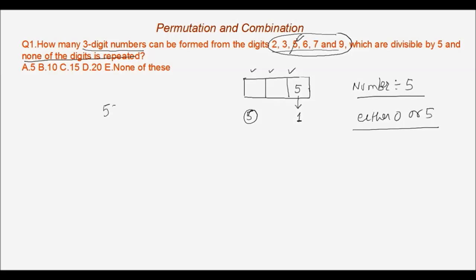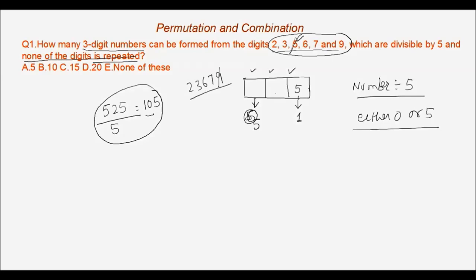Once we use 5 at the last place, we are left with five remaining digits: 2, 3, 6, 7, and 9. So the second place can be filled in 5 ways. Whichever digit is used at the second place cannot be reused at the first place, leaving 4 options for the first place. So the total number of three-digit numbers divisible by 5 with no repeated digits is 4 into 5 into 1, which equals 20 numbers.